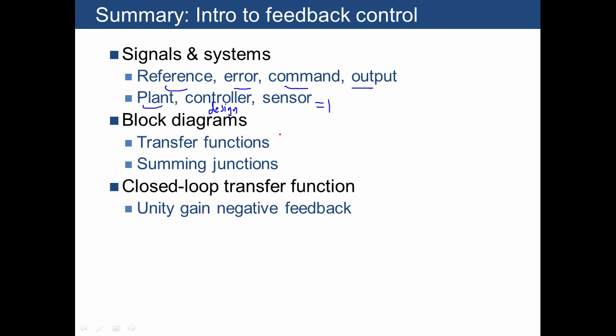We also explained how to deal with transfer functions in blocks as well as what to do with summing junctions in order to produce an output. Finally, we defined what we call the closed-loop transfer function, where we have a reference, we have a negative feedback coming back from the output of our system, and we may have a controller and some other pieces in the middle. And when we feed that output back, we often have unity gain, so that's where that term unity gain negative feedback comes from.